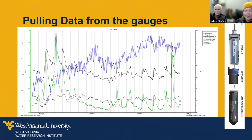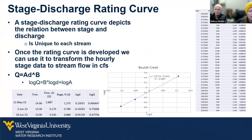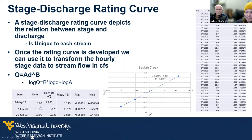Now that we have stage and discharge data from those streams, we can create a stage-discharge rating curve, which is unique to each stream. Once the rating curve is developed, we can use it to transform all data collected from the gauge into streamflow in CFS using the equation Q = A × D^B. This is done using a linear regression through log-transformed data. We did this for all 15 streams and then passed it over to Dr. Strager to update the models.